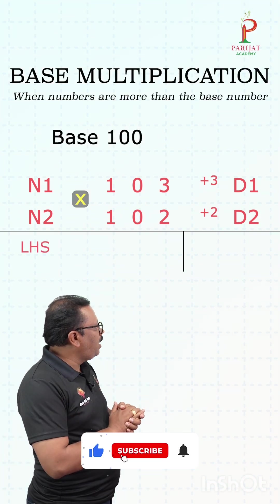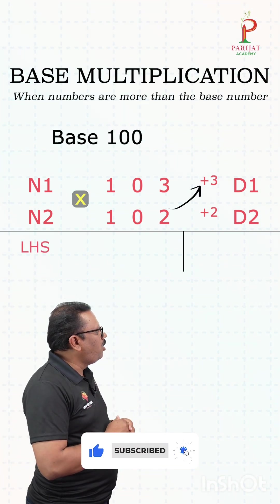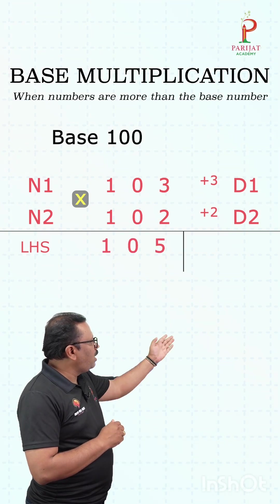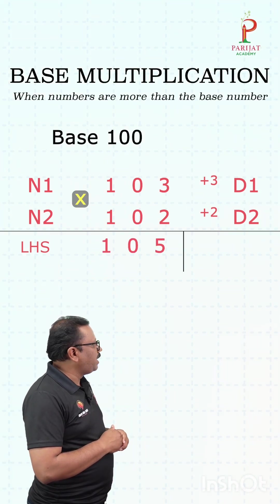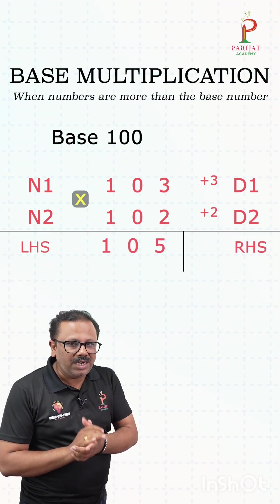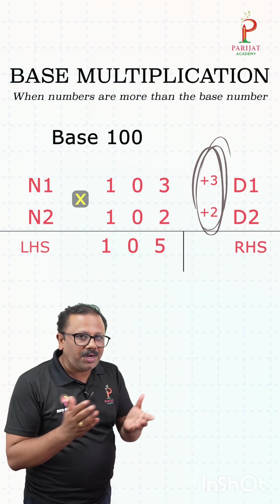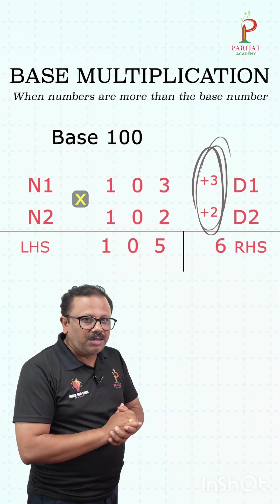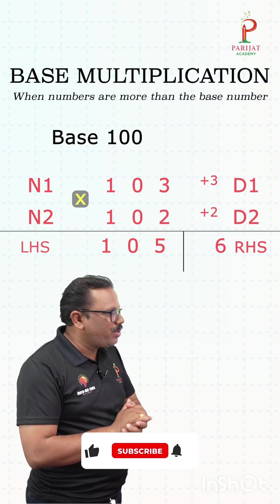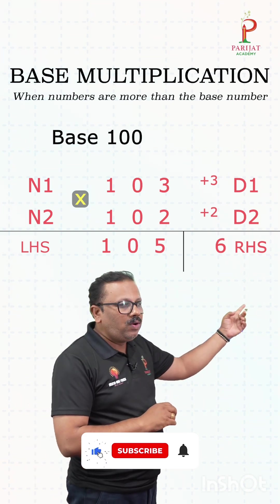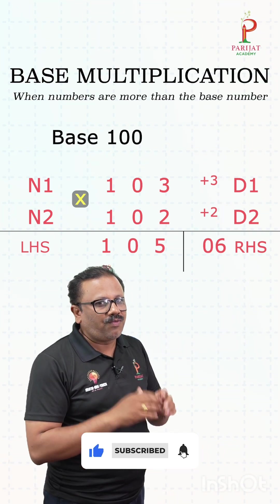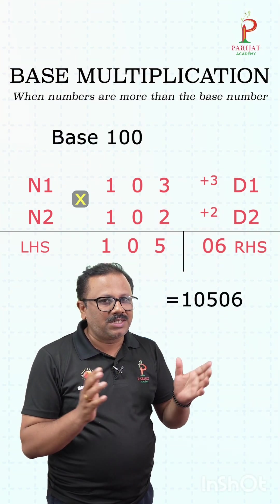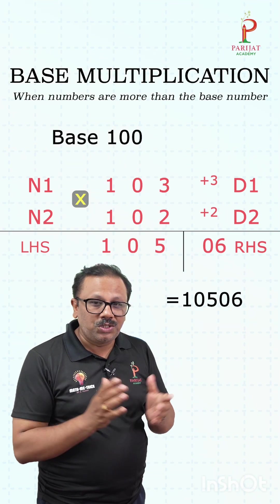Again we do cross addition to get the left-hand side: 102 plus 3 gives us 105, which is our left-hand side. To get the right-hand side, multiply d1 by d2, so 3 times 2 is 6. But since the base is 100, we place a 0 before the 6. So our final answer becomes 10506.